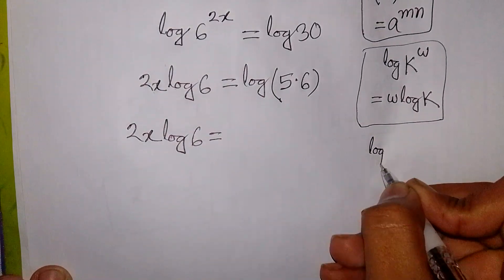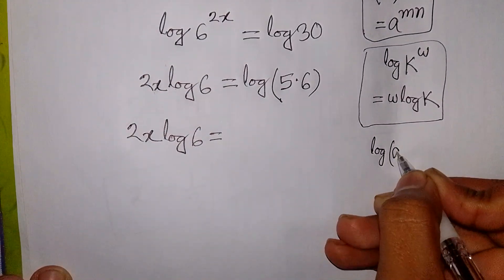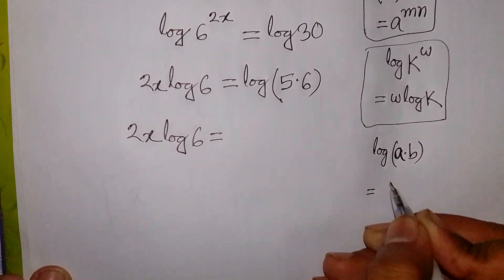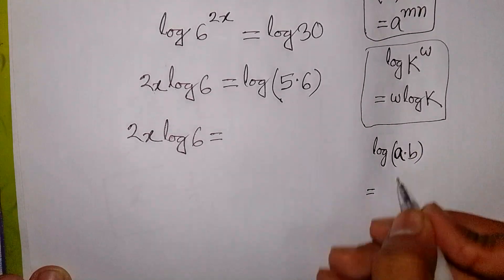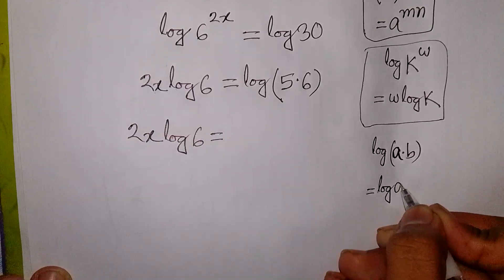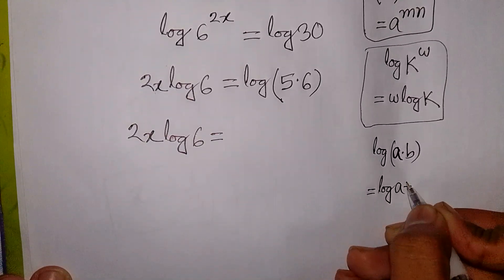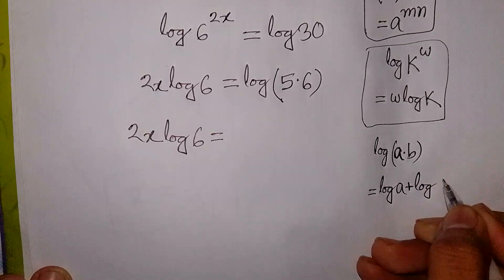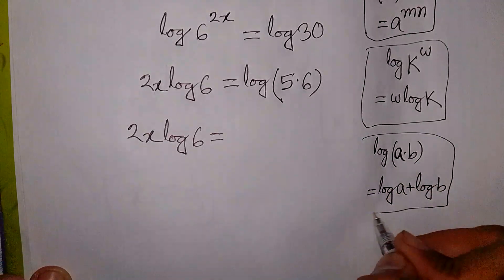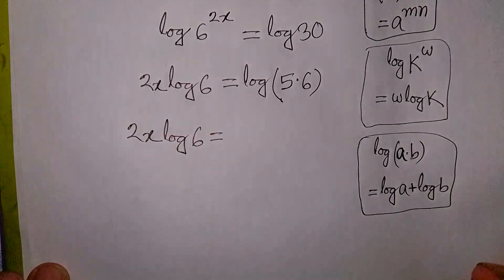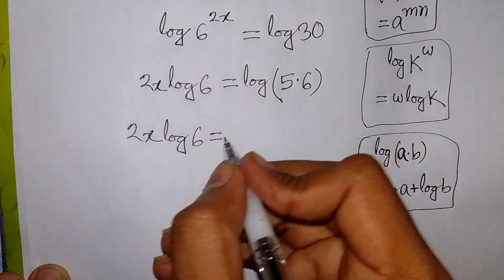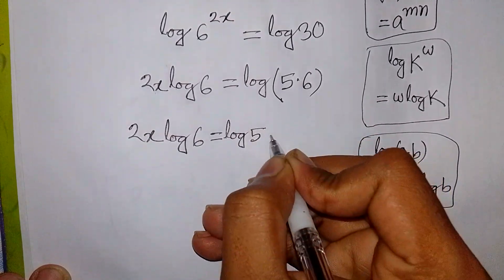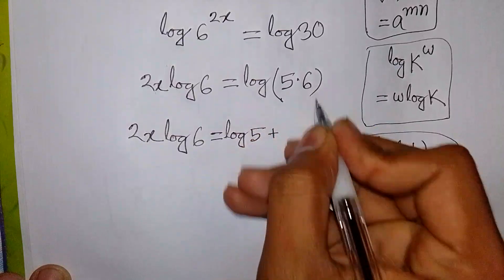Now we apply this formula: log of a times b is equal to log a plus log b. So it will be 2x log 6 is equal to log 5 plus log 6.